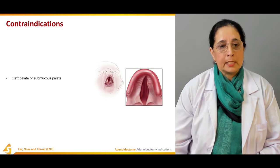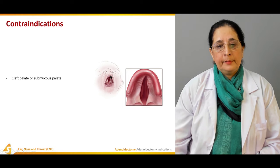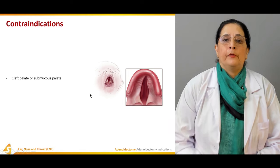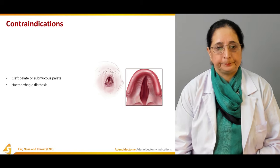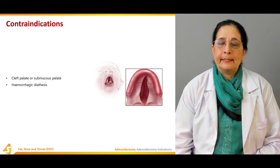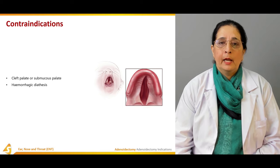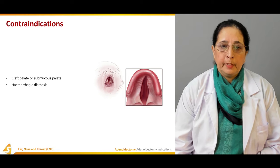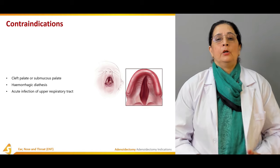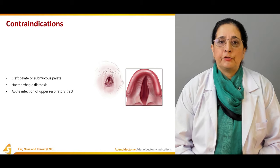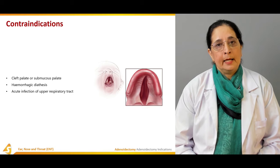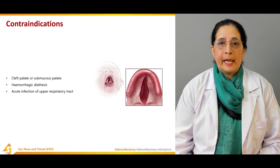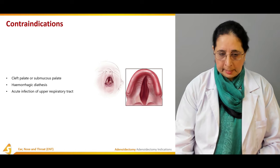Now some contraindications — conditions in which adenoids should not be removed. First, cleft palate or submucous palate is a contraindication for performing adenoidectomy. Second, hemorrhagic diathesis: if there is a bleeding disorder, adenoidectomy should not be performed. Third, acute infection of the upper respiratory tract — once the infection is healed and the patient is better, then we can go ahead, but during acute infection it is a contraindication.